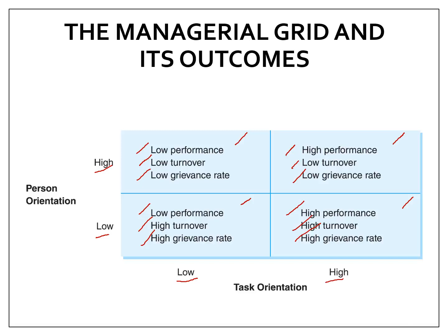According to the managerial grid, team leaders are the best kind of leaders. However, according to McClelland, task-centered leaders are the best, because those who give high importance to power and low importance to affiliation are the most effective. So right now you can see opposing views on what is the best type of leadership approach.